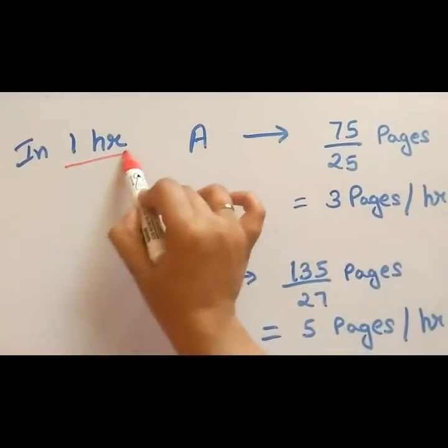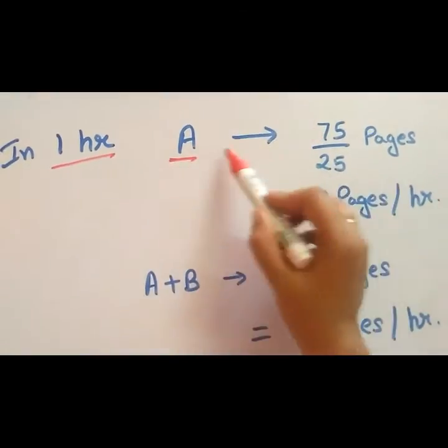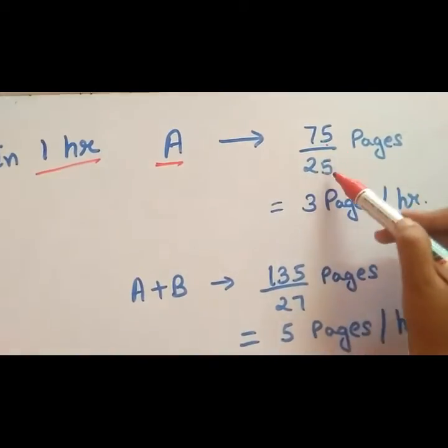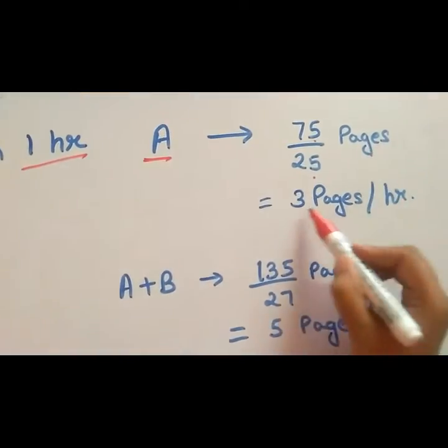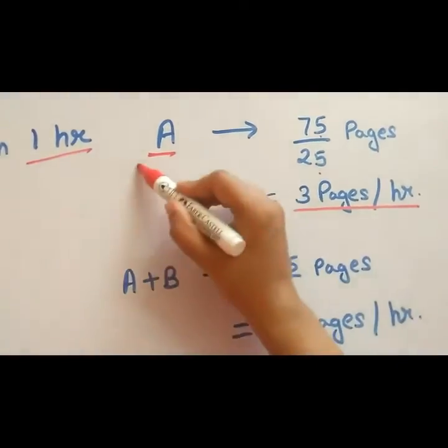Let's see, in 1 hour A can write how many pages? A can write 75 divided by 25 pages. That is 3 pages in 1 hour A can write.